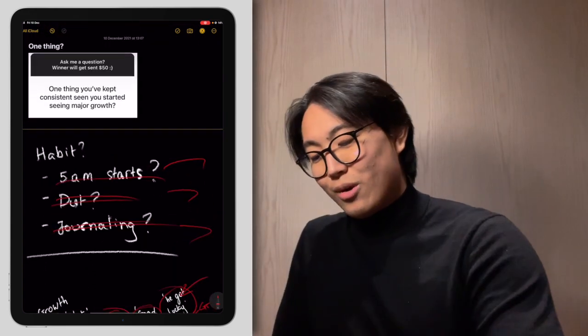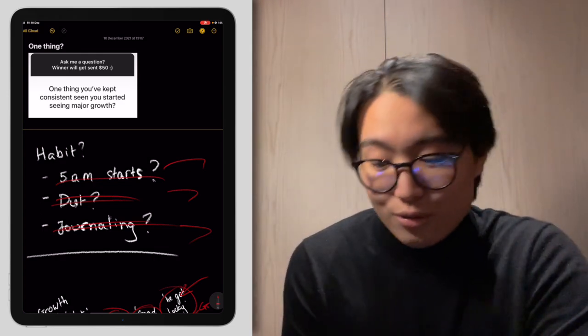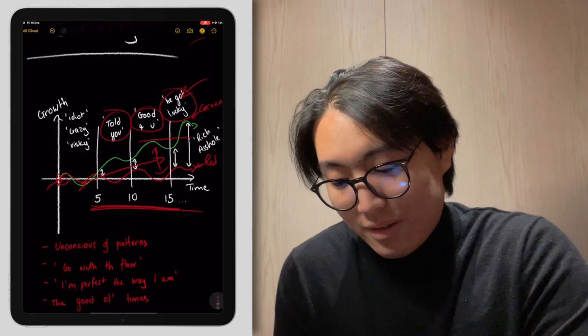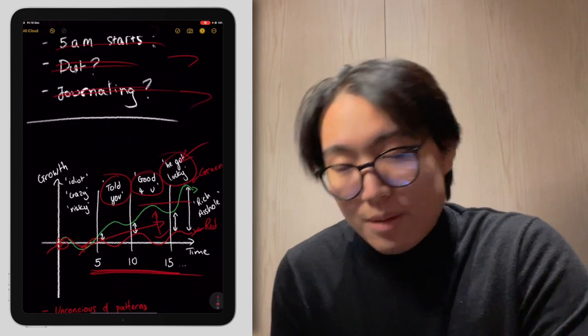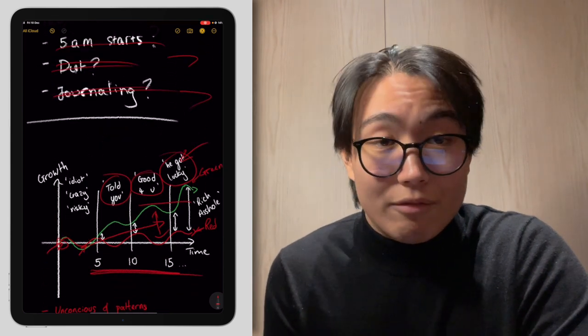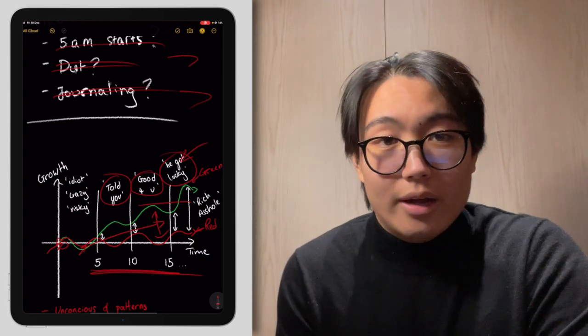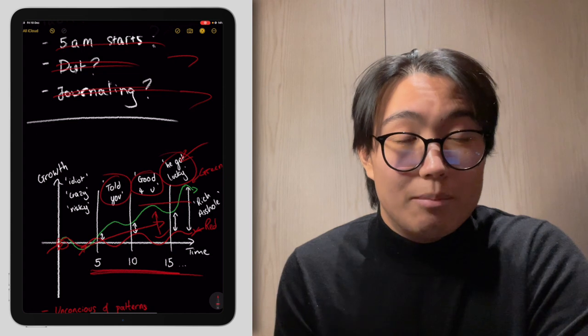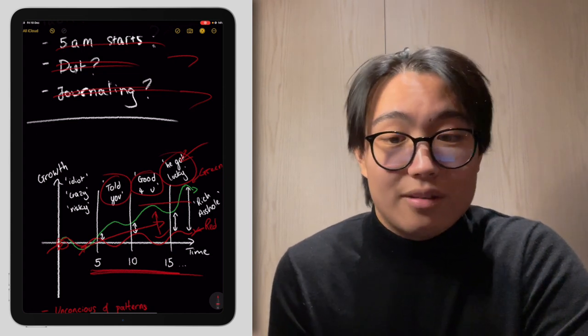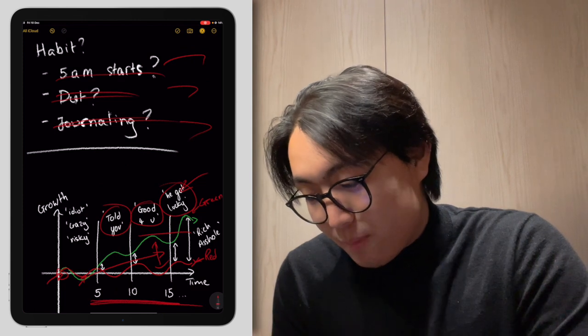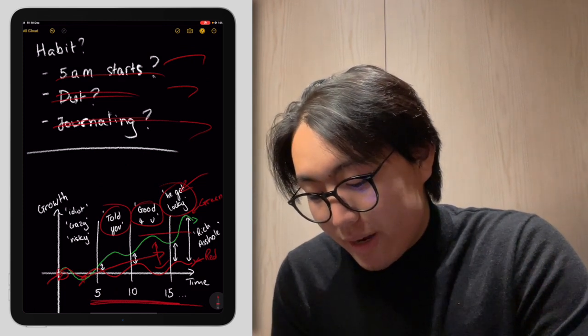So to go back to the original question, 'what is the one thing you've kept consistent since you started seeing major growth,' it's basically just me keeping my eye on the main focus of what I want to do and just going after it and trying to be as rational and as objective as I can to try to move myself towards that goal.